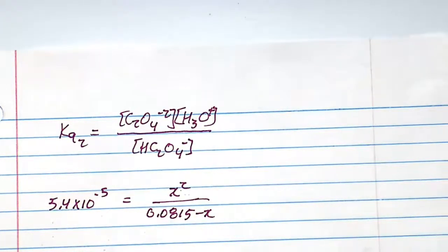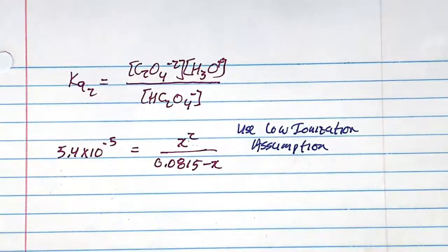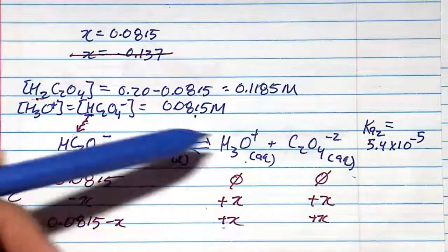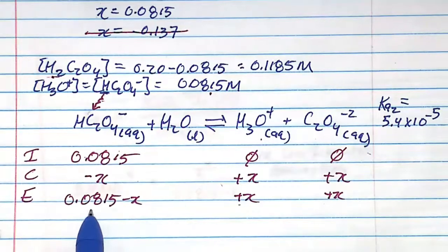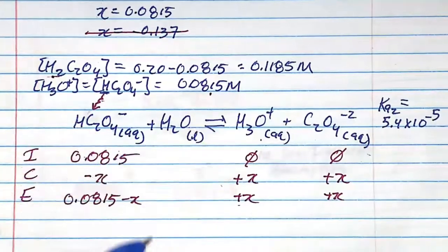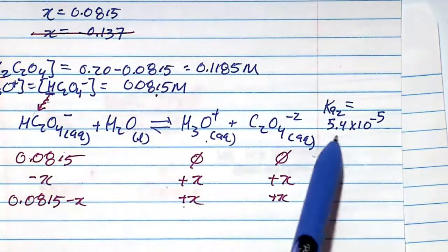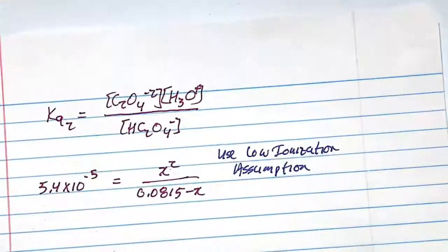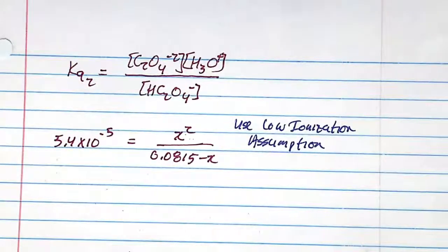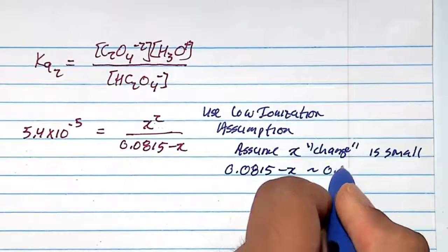Here I'm going to apply the low ionization assumption, realizing it could be wrong and may require the quadratic if it fails. The low ionization assumption says the reaction goes so little in the forward direction that X is negligibly small, so 0.0815 − X ≈ 0.0815. With a Ka of 10⁻⁵, which already favors the reactant side, I'm cautiously making this assumption — I'd be more confident at 10⁻¹⁰ or lower. If the assumption fails, I'll use the quadratic.